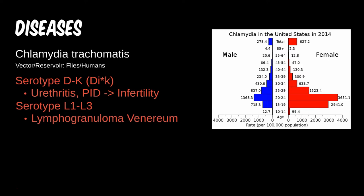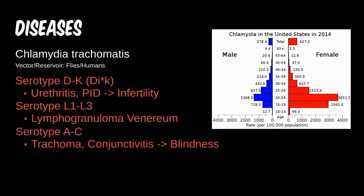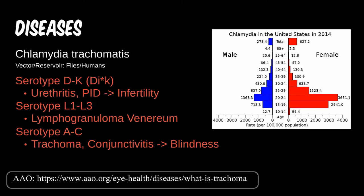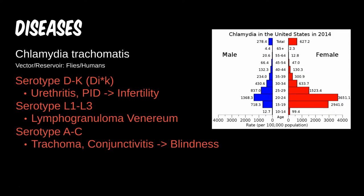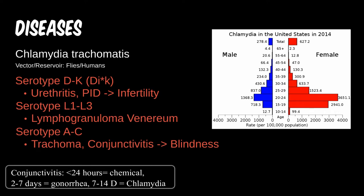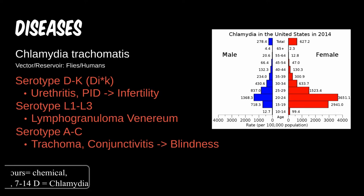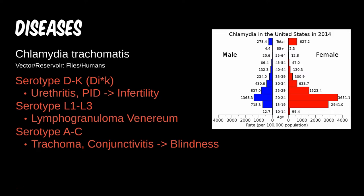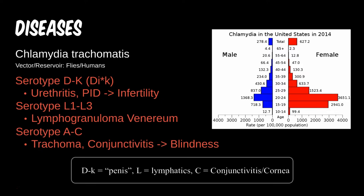The L serotypes cause a disease of the lymph nodes and lymphatic system, generally in the inguinal region — remember that L is for lymph node. For the A through C serotypes, they affect the eyes. The trachoma in the name C. trachomatis is an eye infection; according to the American Academy of Ophthalmology, the worldwide prevalence is around 41 million individuals. It starts with mild itching and conjunctivitis but later leads to corneal ulcers, scarring, and blindness. For A through C, think C for conjunctivitis.